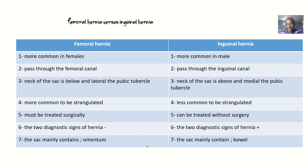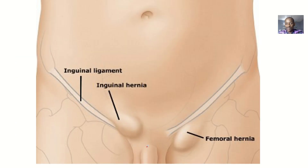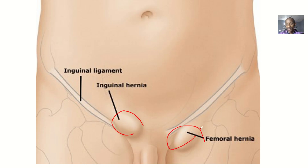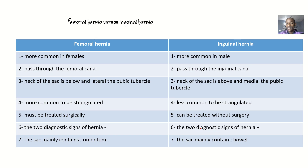So just a recap — we're talking about femoral hernia and inguinal hernia, two different types, and the differences between them. Femoral hernia occurs in the femoral region and is more common in females, while inguinal hernia is more common in males.